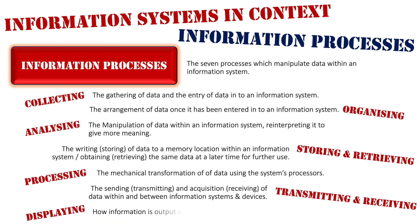The final information process is displaying — how information is output and presented by the information system. This is not just visual display: monitors, projectors, and tablet screens display visually, but displaying also covers audio output through speakers, and all different media types including text, image, audio, video, and animation. It's about how information is output back to the user so they can see the information and complete what they're using the system for.